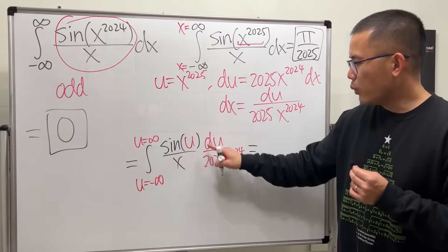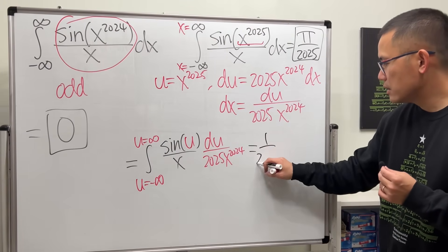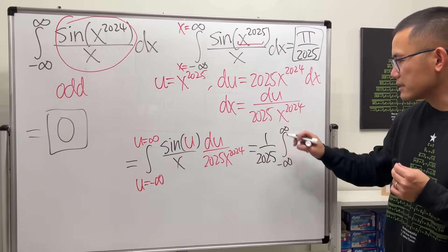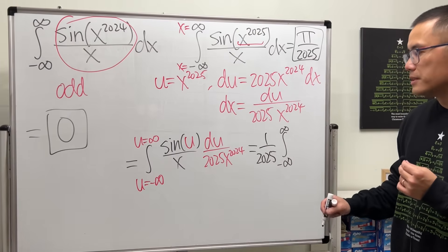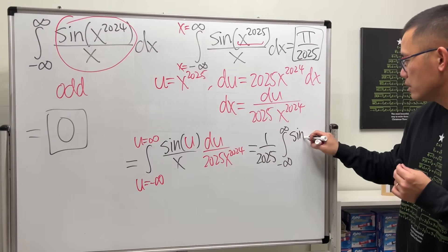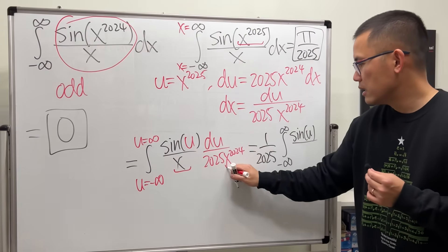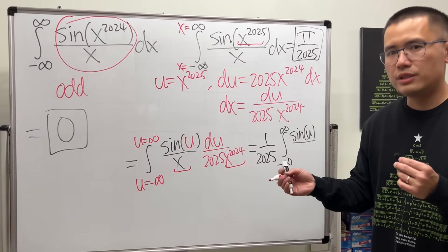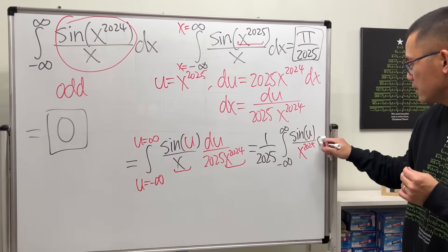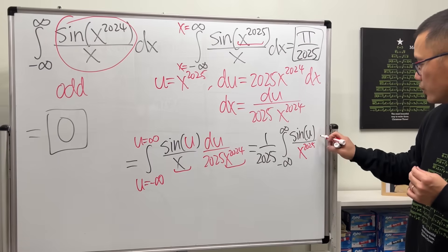Now have a look. We have 1 over 2025. We can put it on the outside. Integral going from negative infinity to positive infinity. Again, in terms of u now, and then we will have what? Sine u over this and that. It's precisely x to the 2025. We are in the u world, okay? This is the u world. We have the du here.